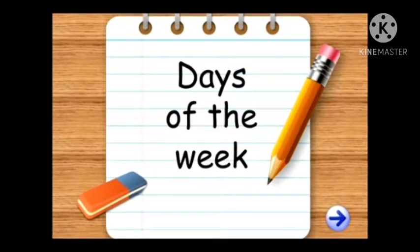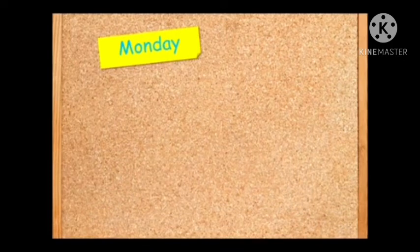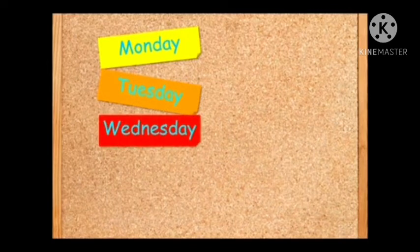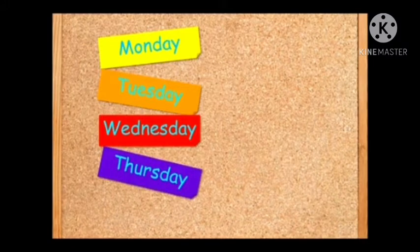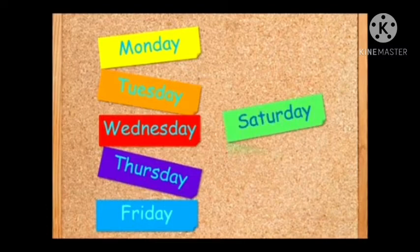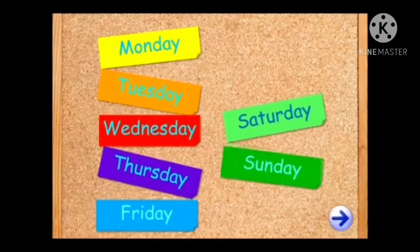Tell me, how many days are there in a week? There are seven days in a week. Yes, there are seven days in a week. Now get ready for your reading. Monday, Tuesday, Wednesday. Which day comes next? Thursday. Next one is Friday, Saturday.